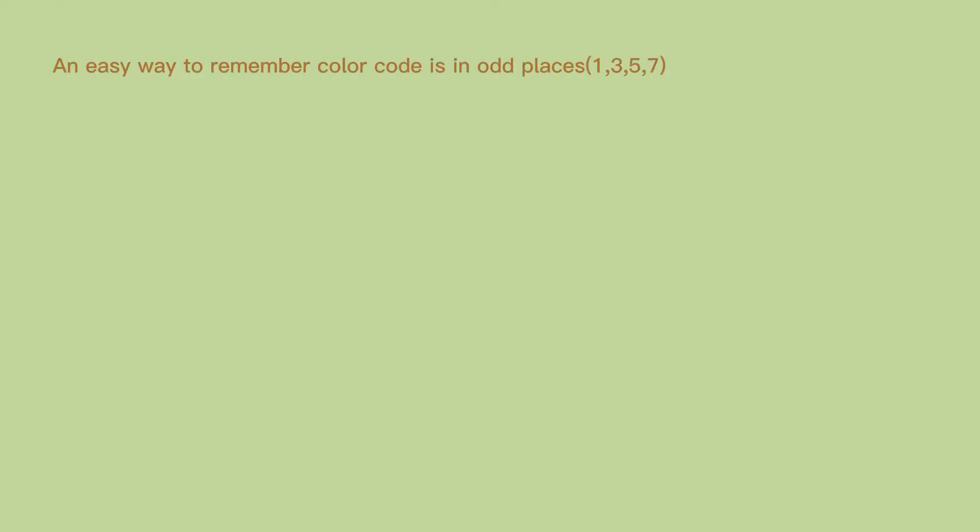An easy way to remember the color code is that in odd positions — 1, 3, 5, and 7 — the colors with a white stripe are present.